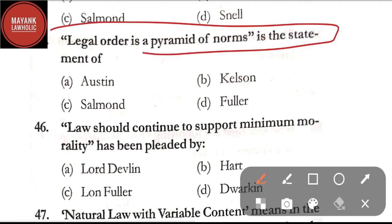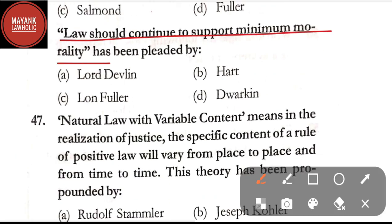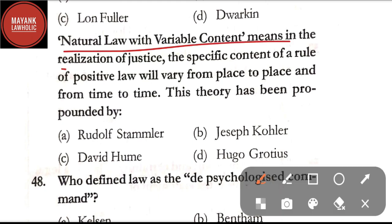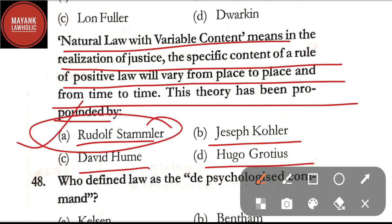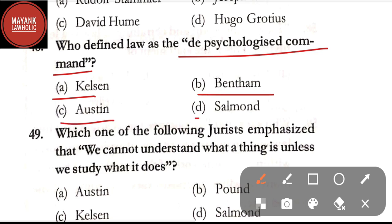Question number 45: 'Legal order is a pyramid of norms' is the statement of — option A: Austin; option B: Kelsen; option C: Salmond; option D: Fuller. The correct answer is option B, Kelsen. Question number 46: 'Law should continue to support the minimum morality' was pleaded by — option A: Lord Devlin; option B: Hart; option C: Lon Fuller; option D: Dworkin. The correct answer is option A, Lord Devlin. Question number 47: 'Natural law with variable content' — this theory has been propounded by — Rudolph Stammler, Joseph Kohler, David Hume, or Hugo Grotius. The correct answer is option A, Rudolph Stammler.